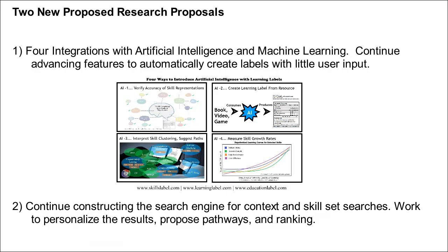Two new research proposals: we want to get artificial intelligence and machine learning into our system to help verify the accuracy and work with growth rates. We also want to improve the search engine — get a little bit deeper with the context and skill searches, personalize the results, propose pathways, and provide suggestive rankings as well.